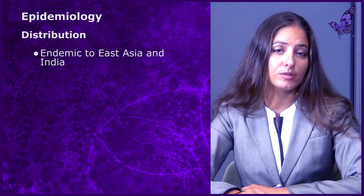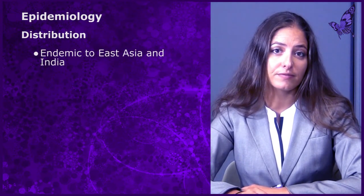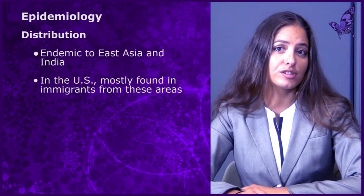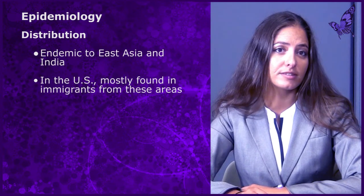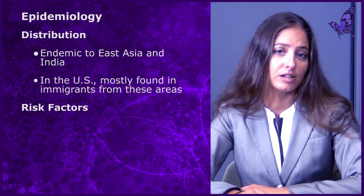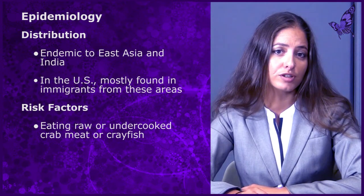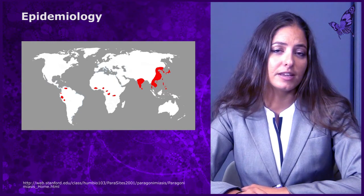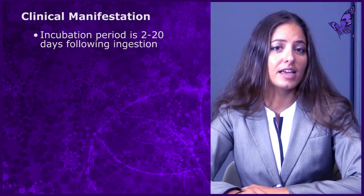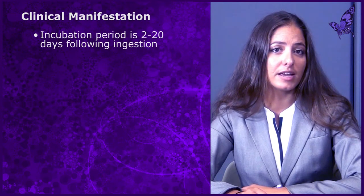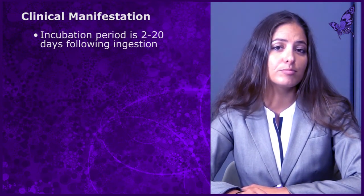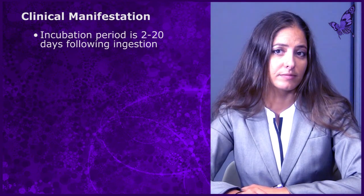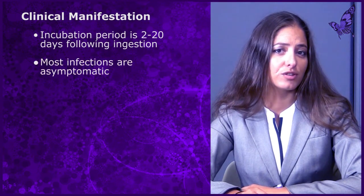Lung flukes are endemic to East Asia and India. Cases of lung flukes in the United States are typically found in immigrant populations from endemic areas. Risk factors for developing lung flukes include eating raw or undercooked freshwater crabs or crawfish. The red regions on this map indicate areas endemic to lung flukes. It takes anywhere from 2 to 20 days following ingestion of raw crab meat to present with symptoms. However, most infections are asymptomatic.